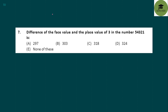Next question: What is the difference of the face value and the place value of 3 in the number 54321? The place value of 3 is 300, and the face value is 3. So the difference is 300 minus 3, which equals 297. Option A is your correct answer.